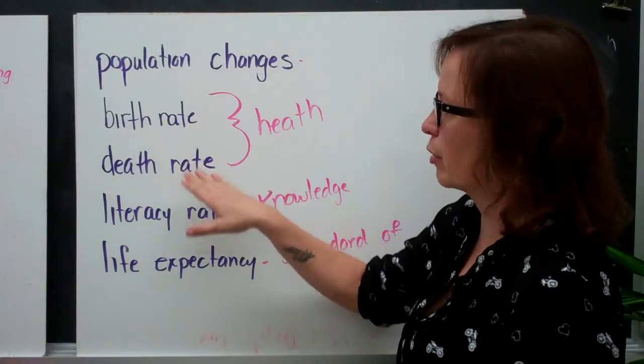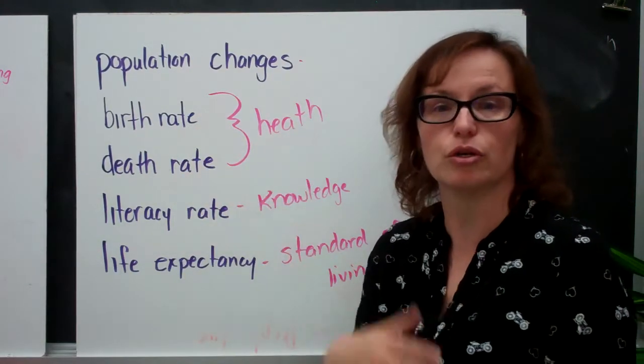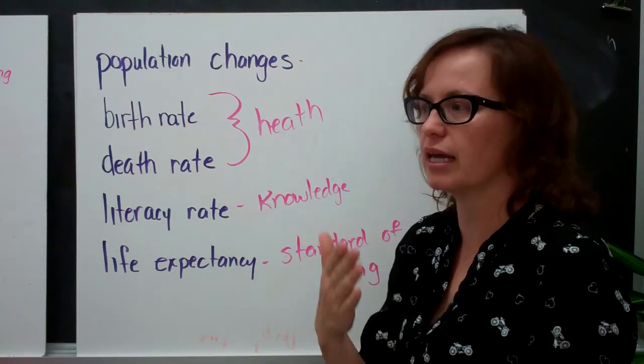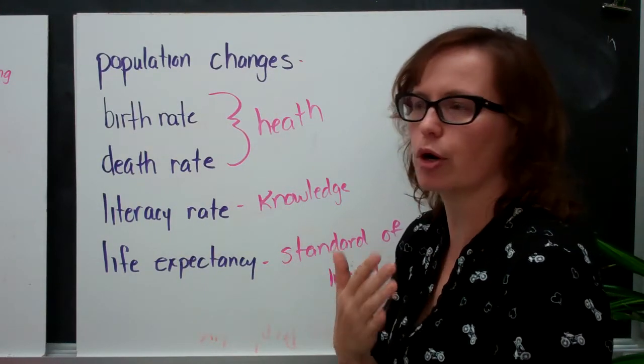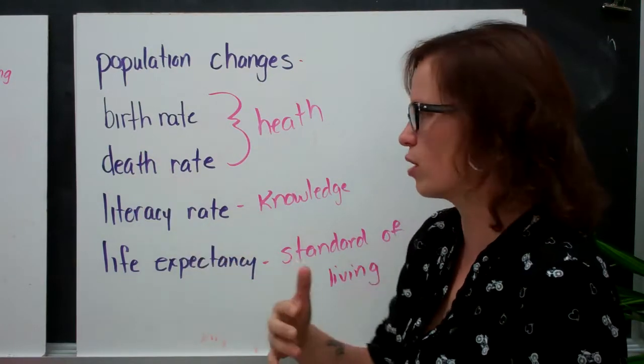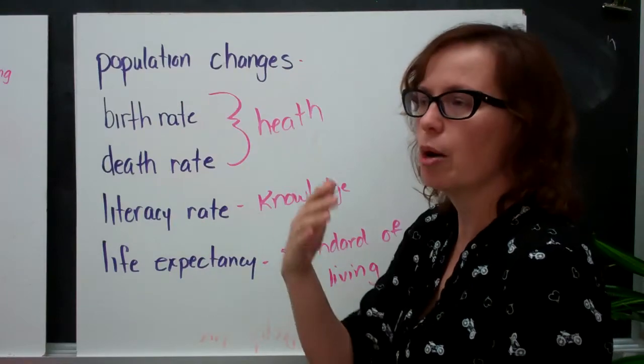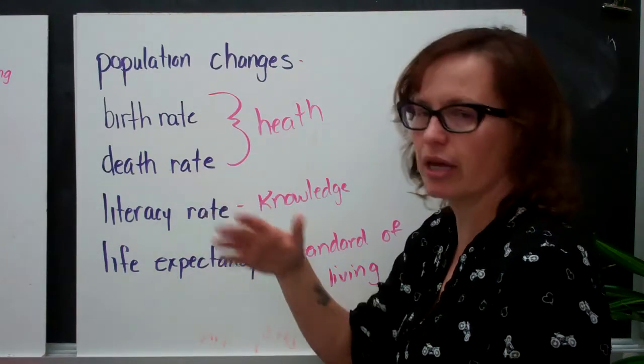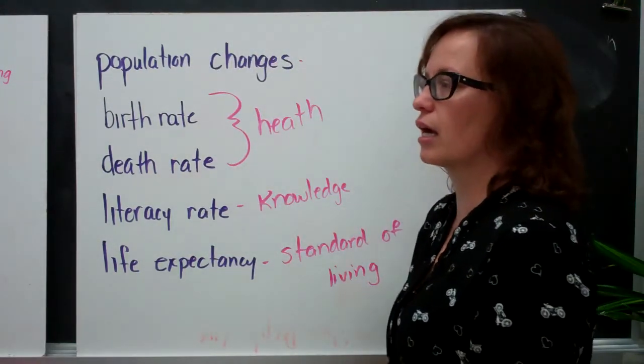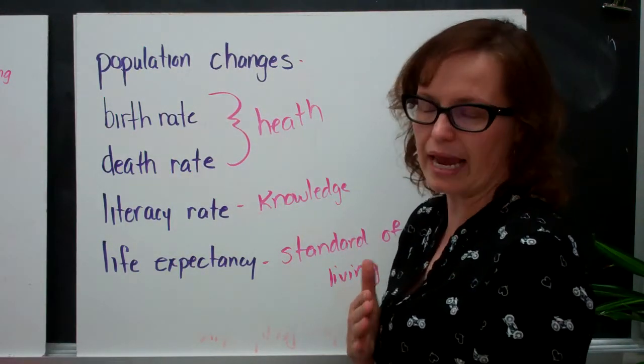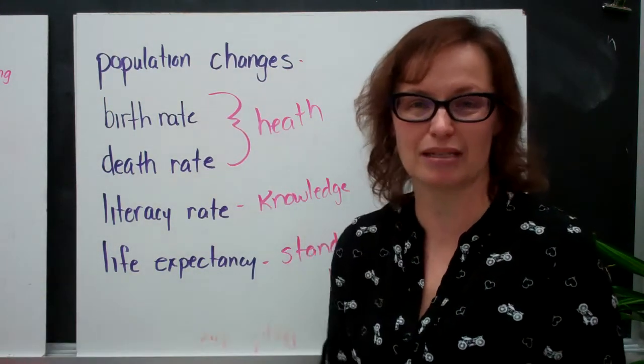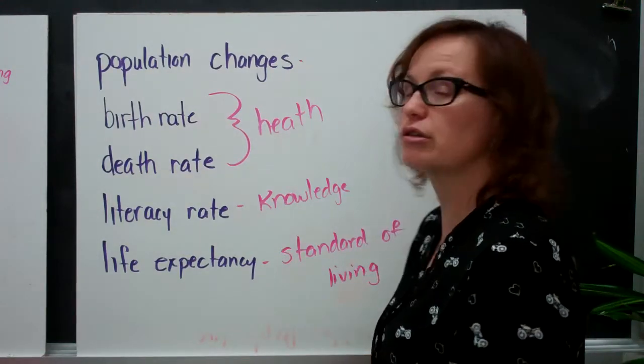They also calculate birth rate and death rate which is related to health in that human development index. So the idea of how many births there are per year from women 14 to 15 to 44 and then the death rate per thousand people per year in a certain area. The literacy rate is based on how many people 15 years of age or older can read and write and life expectancy, how long can we expect someone to live and that has to do with their standard of living.